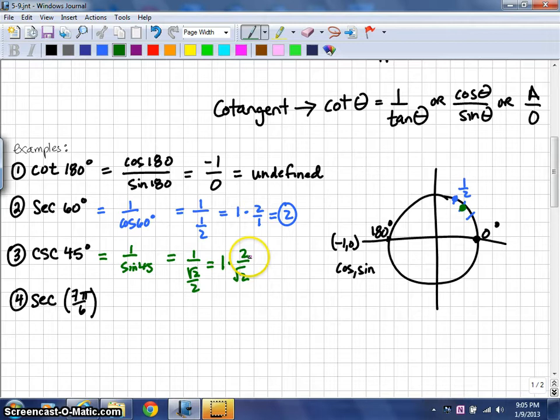The only problem with this particular value is that you cannot leave a square root on the bottom of a fraction. So, if there is a square root there to get rid of it, you multiply by it on the top and the bottom. When you multiply across here, the square root of 2 times itself simply becomes a 2.